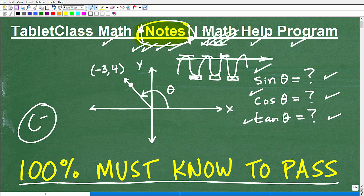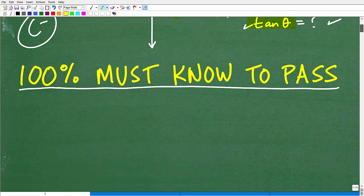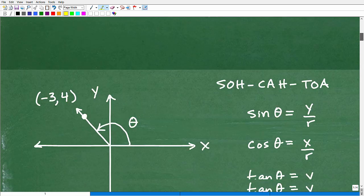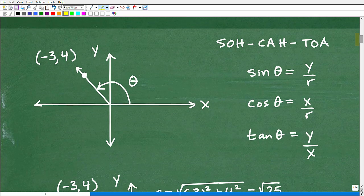All right. Now, if you think you know how to do this problem, go ahead and pause it and kind of use this as a little pop quiz. But if you're not sure, okay, well, let's get into it. So we're gonna find the sine, cosine, and tangent of this angle right here. So what do we need to do? Well, let's go down here and take a look at a couple things.